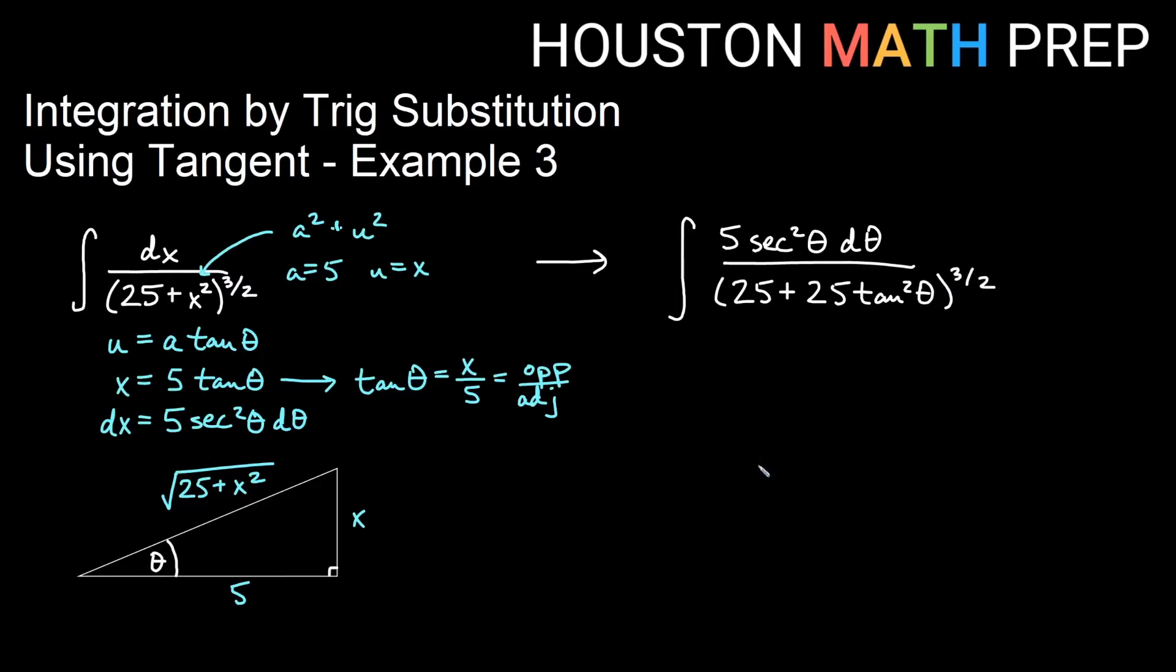First thing, I will go ahead and bump out my 5. So I'll have a 5 on the outside, secant squared theta d theta.